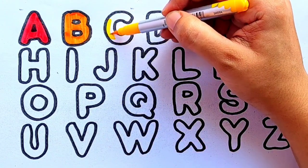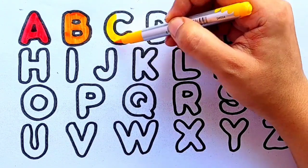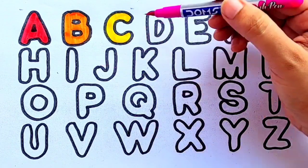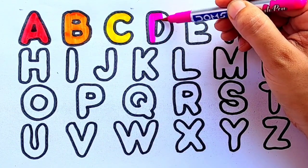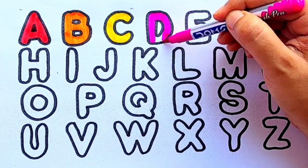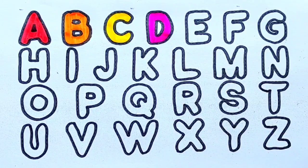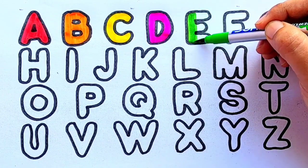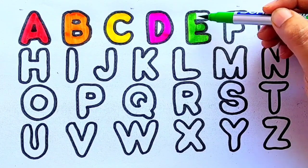Yellow color C, C for cat. Pink color D, D for dog. Light green color E, E for elephant.